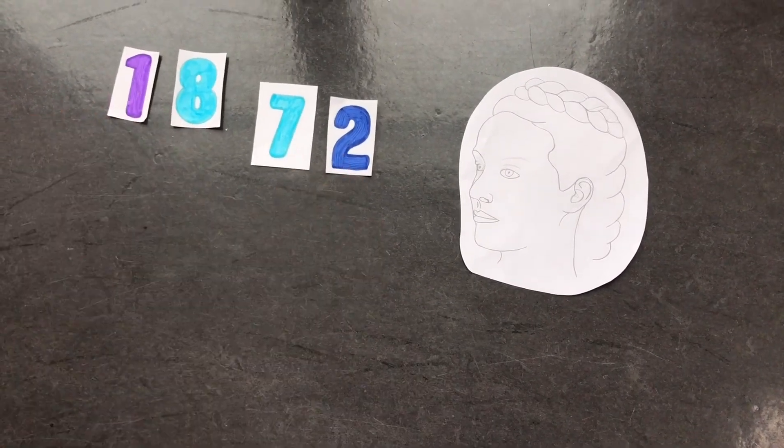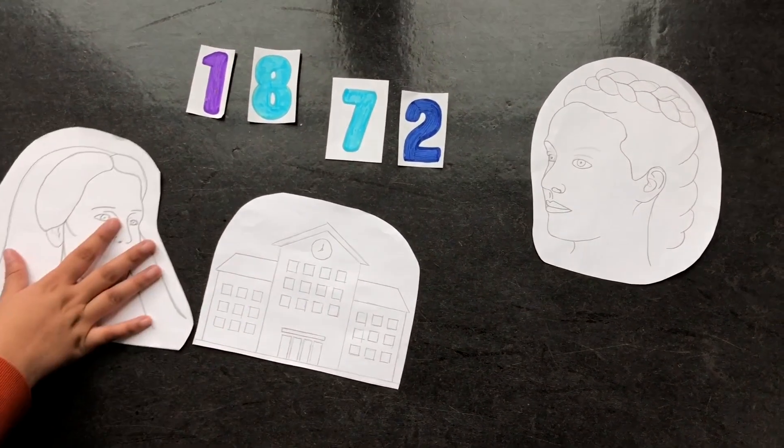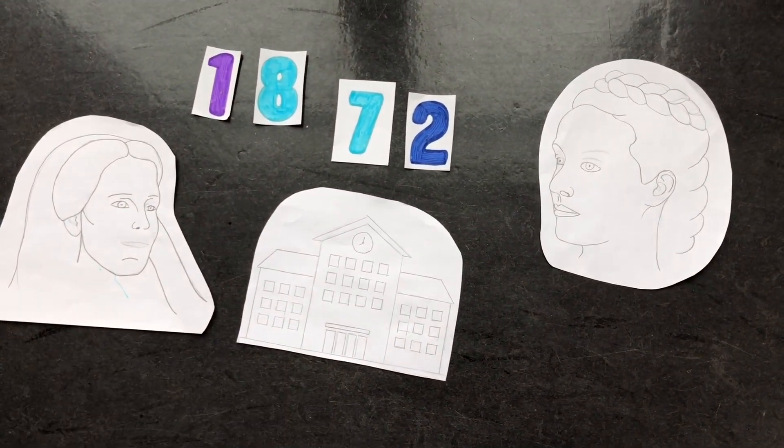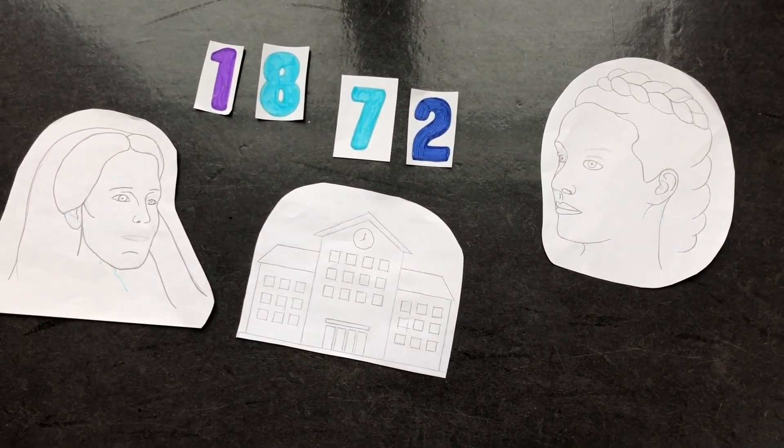In 1872, Elizabeth founded the New Hospital for Women in London, staffed entirely by women. Anderson appointed her mentor and friend Elizabeth Blackwell as a professor of gynecology there.